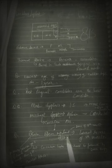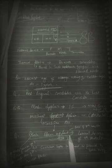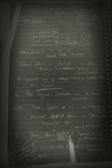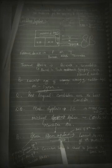In Michel aplasia where the cochlea is absent, we cannot do cochlear implant. Instead, we can do brainstem implantation. An important All India repeat question asks where in the brainstem we do this — the answer is the lateral recess of the 4th ventricle.